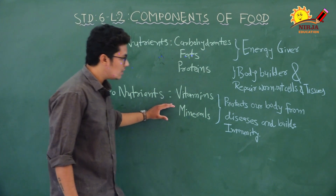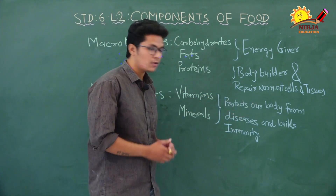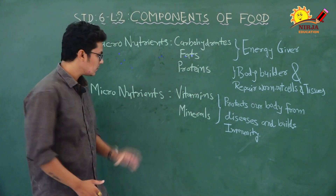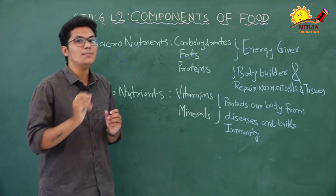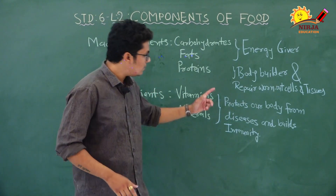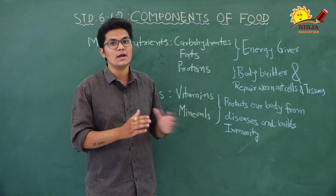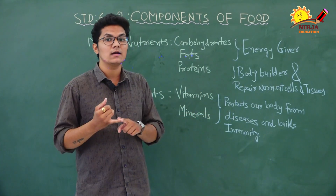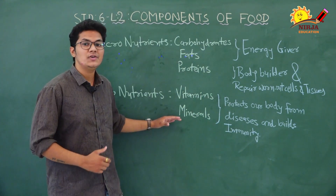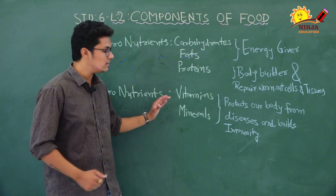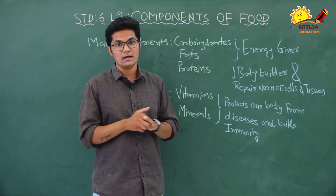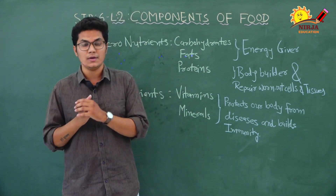Micronutrients protect our body from disease and build immunity. Our body needs them in very small traces, but their main work is to protect our body from different infections and diseases. They are like soldiers of our body — they protect us from disease and infection and boost immunity.